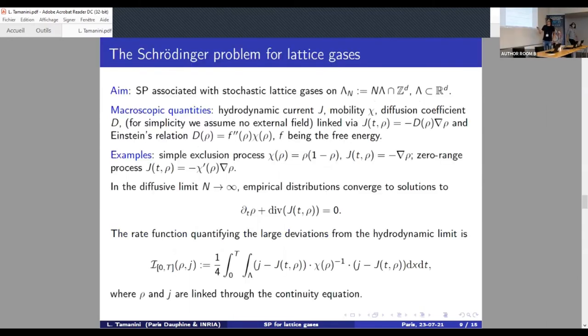So the aim is to define and study a Schrödinger problem associated to stochastic lattice gas. So here, the main quantities that will appear from now on are the hydrodynamic current capital J, the mobility χ, the diffusion coefficient D. For simplicity, we assume no external field. And these quantities are linked together by this identity and by this called Einstein's relation, where small f is the free energy. In the case of the classical Schrödinger problem, f(ρ) is nothing but ρ log ρ. And so these quantities are all provided by the physical model we are considering, and particular and relevant examples covered by this abstract framework are the simple exclusion process, zero range process, but there are many others, like for instance, Glauber-Kawasaki dynamics, and many others.